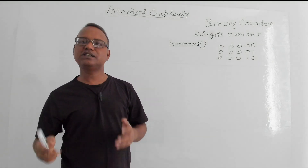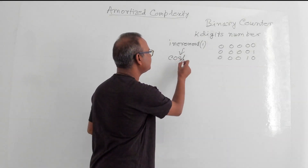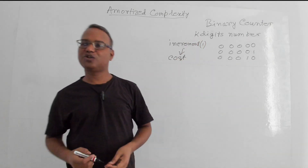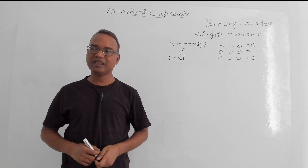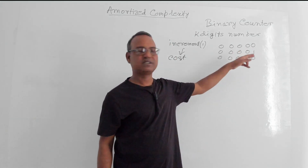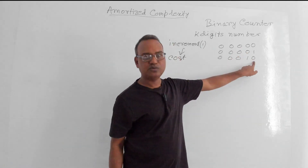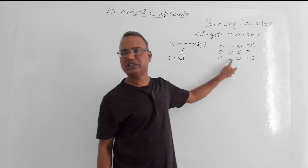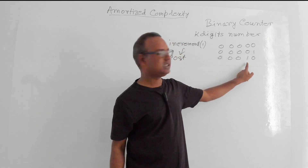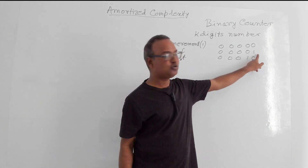Now what is the cost of the increment operation? If the number of digits is K, what is the worst-case cost of the increment operation? In the worst case, the cost is measured by how many digit flips we are making. Every time we are adding 1 to the last bit and manipulating the carry. For example, adding 1 to a number may result in a 2-bit flip in this case.